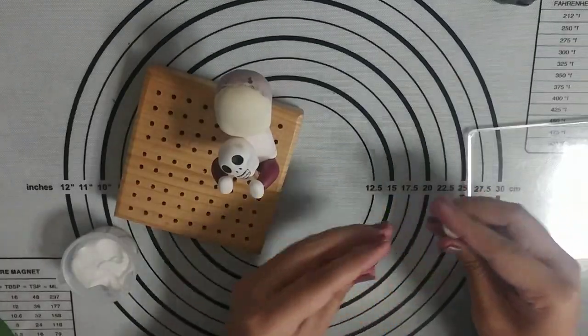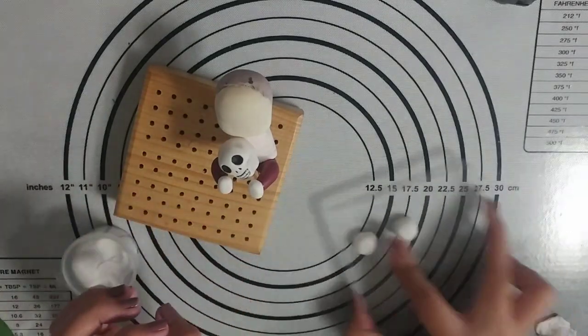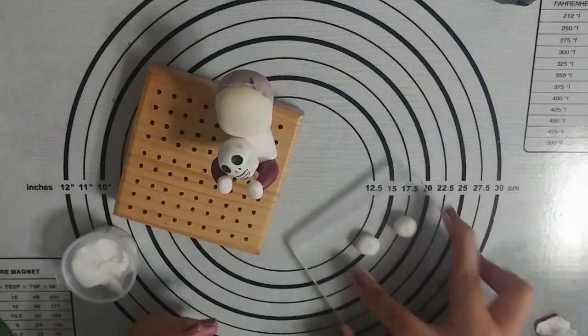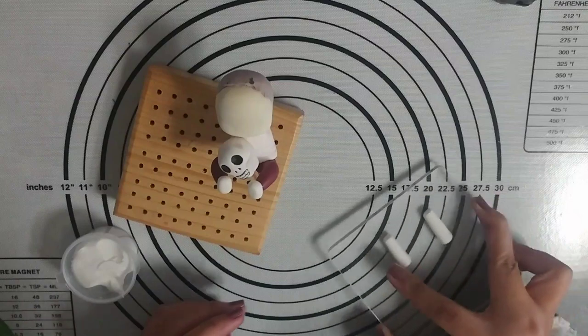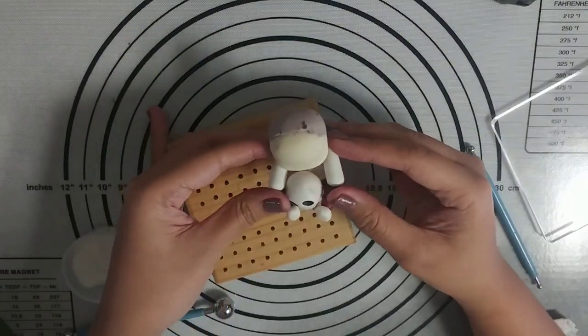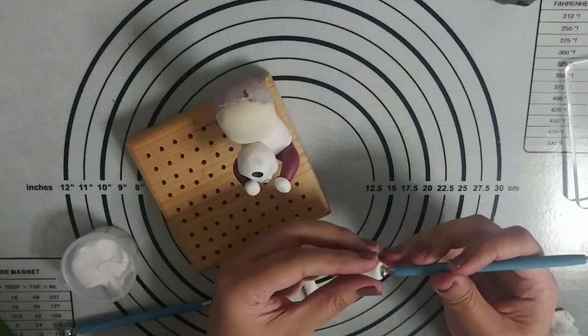Next, I'm making two logs of white clay for her arms and as you can see, I'm rolling both pieces at the same time using an acrylic block to make sure that they're the same size. I'm using a ball tool to make space for her hands.